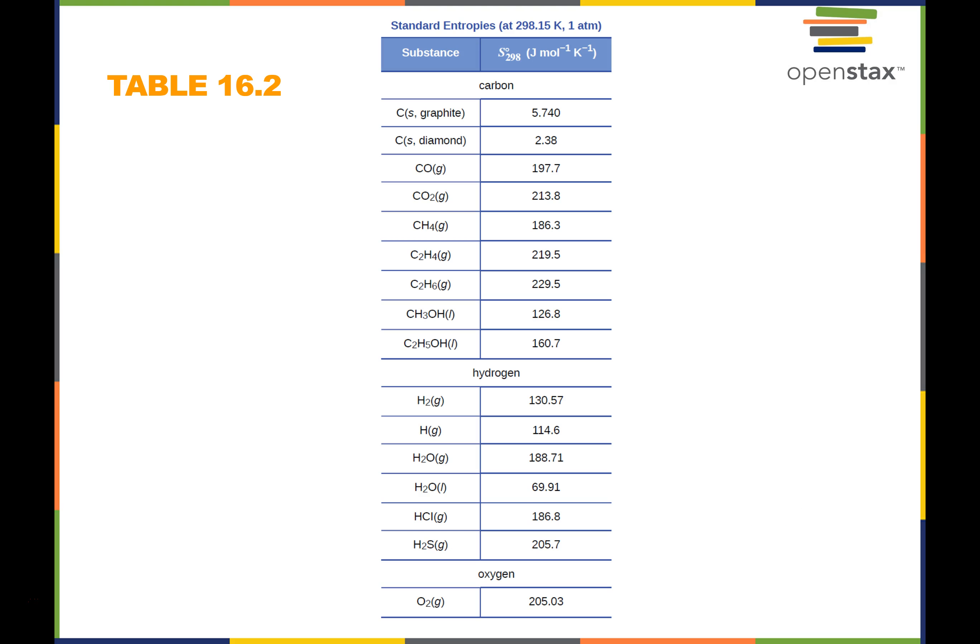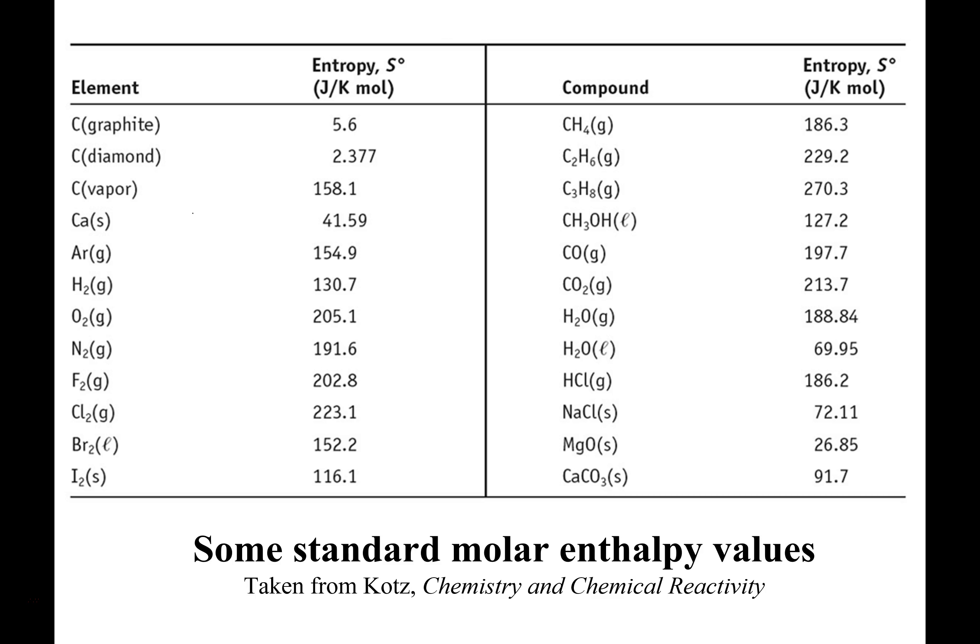Here are entropy values at standard temperature and pressure — 298 K, which is 25°C. Notice there are no zero or negative entropy values. We do see some low numbers. Interestingly, graphite — which is carbon in pencil lead — has a very low entropy at 25°C. The same carbon can exist as graphite, diamond, or gas vapor, with hugely different entropy values. Those are called allotropic forms.